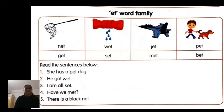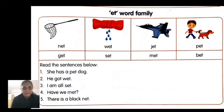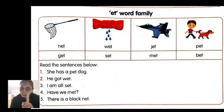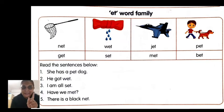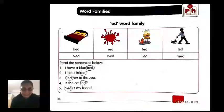This is SR 12, ET word family. Keep your finger on the eight spellings and read them. Then circle them in the sentences. Sentence one: She has a pet dog. Number two: He got wet. Number three: I am all set. Number four: Have we met? Number five: There is a black net. I think you are circling — good! Check your answers, children.